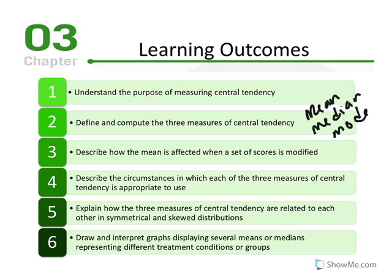We'll explain how the three measures of central tendency are related to each other in symmetrical and skewed distributions. From the previous chapter, symmetrical distributions look like this visually, and we have positively skewed and negatively skewed distributions. Finally, we'll learn to draw and interpret graphs displaying several means or medians representing different treatment conditions or groups.